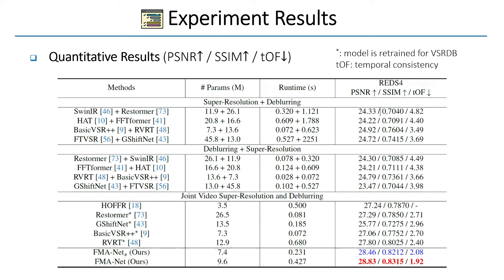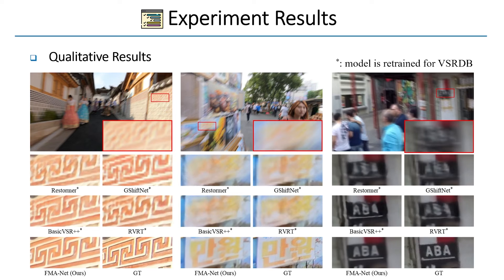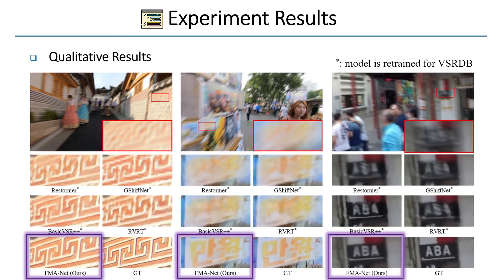Here are the experiment results. This table shows PSNR, SSIM, and TOF for the various methods on the REDS-4 test set, and our FMA net outperforms all compared methods. We also compare the visual results. Our FMA net restores sharp edges and details compared to other methods.